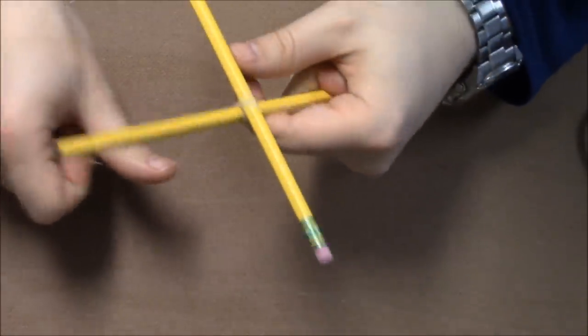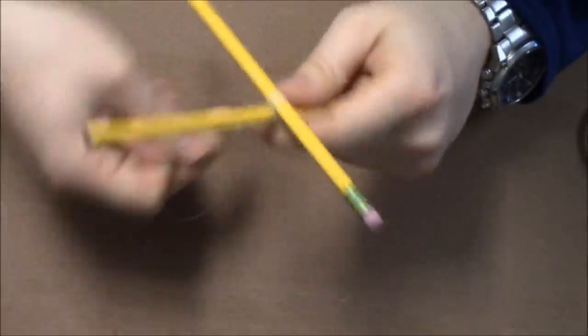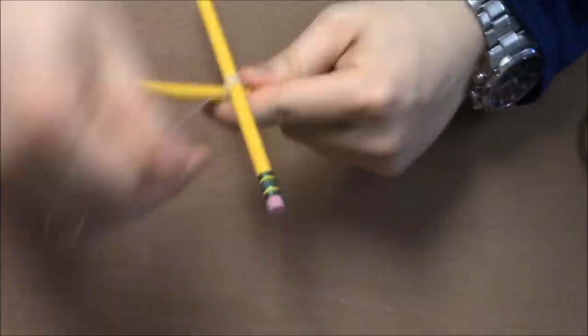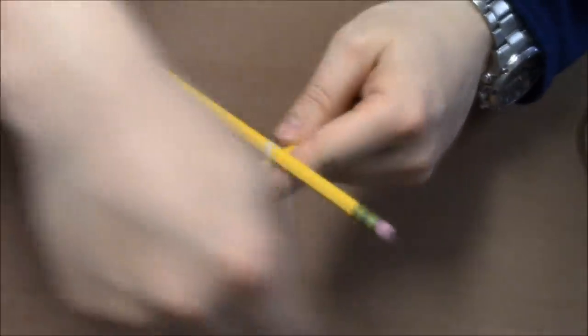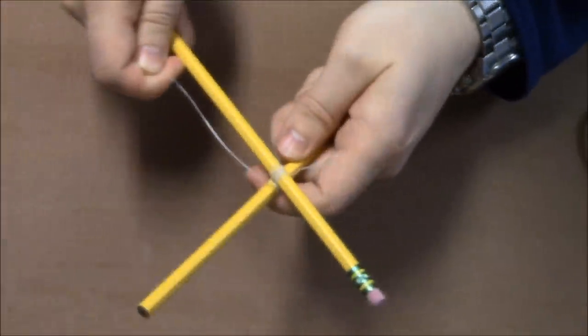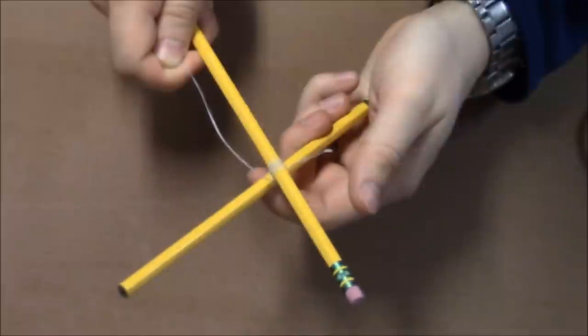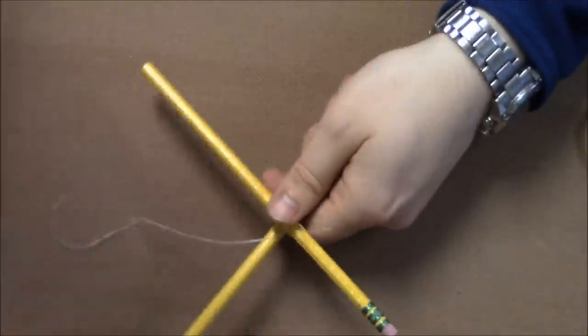Next, wrap the string around your lashings to tighten them. These are called frapping turns. Finally, tie the end off on the pencil.